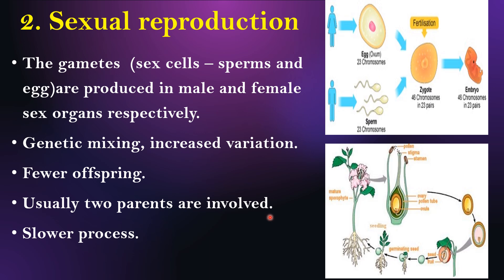In some organisms, two sex organs are produced from a single parent. Can you name that type of organism? Example: bisexual plants, where androecium and gynoecium are produced in a single flower. That type of organism we call a hermaphrodite — both sex organs are produced in a single organism. Sexual reproduction is a very slow process.